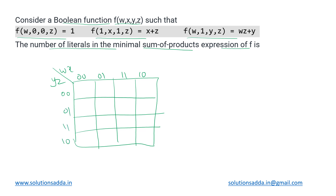The first expression says f(w, 0, 0, z) = 1, which means the values corresponding to x and y are set as zero. If we set x and y to zero and keep w and z independent — they can take either zero or one — then irrespective of their values the result is always one. The cells corresponding to x=0 (these two columns) and y=0 (these two rows) give four cells that are all set to one.